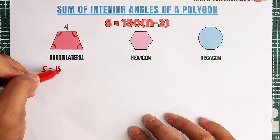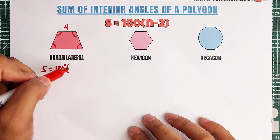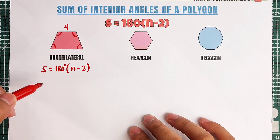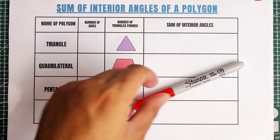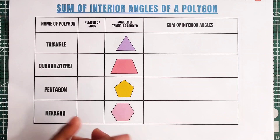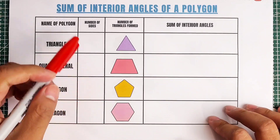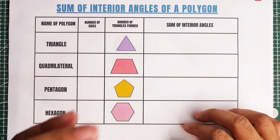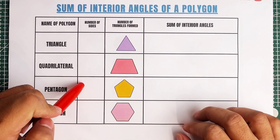S is equal to 180 degrees times N minus 2. Hi guys, it's me, Teacher Gon. In today's video, we will talk about the sum of interior angles of a polygon. So without further ado, let's do this topic.